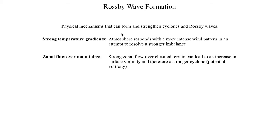And another mechanism is zonal flow over mountains, which is going to be something we talk about during the course of this lecture, and that's related to the concept of potential vorticity. But it turns out if you've got a strong zonal flow pattern, usually a west-to-east flow pattern going over mountains, if you've got a strong westerly flow over some elevated terrain,